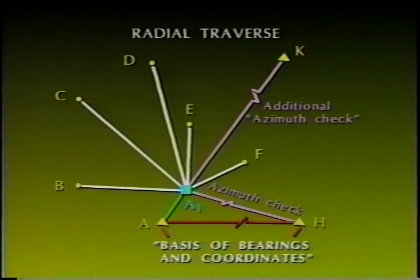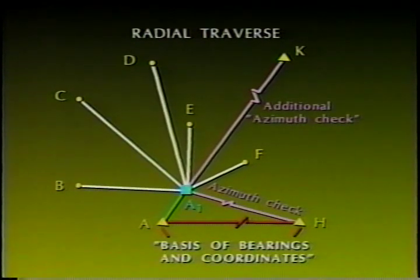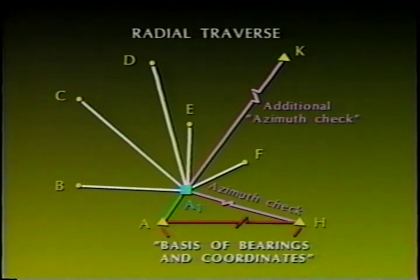The radial traverse is something of an oxymoron, in that making radial ties to eccentric points is not of itself traversing. The following is an example of a radial traverse: a set of field observations obtained from a single traverse station, which locates the eccentric traverse stations, is often referred to as a radial traverse.